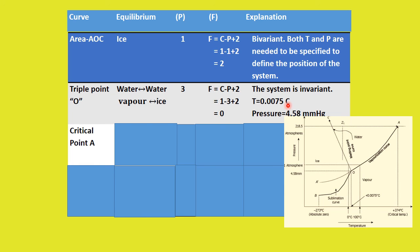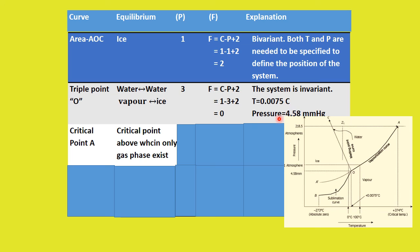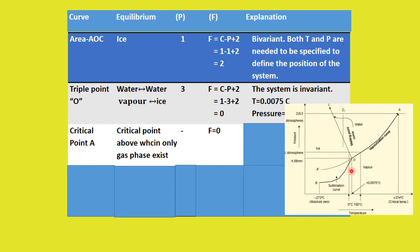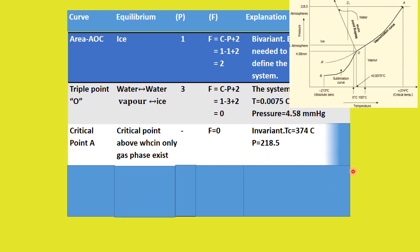Now let us learn about the critical point. Above the critical point, only the gas phase exists and there is nothing to define as a separate phase, so the degrees of freedom is 0 — the system is invariant. The temperature at the critical point is 374 degrees Celsius and the pressure is 218.5 ATM.